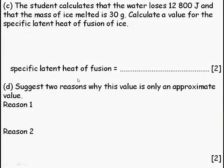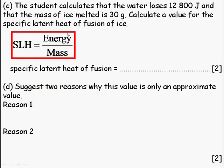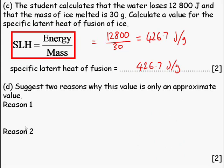Pause the video and read this question. So the student calculated that the water loses 12,800 joules, and that the mass of the ice is 30 grams. Calculate the value for the specific latent heat of ice. Quite easy, just stick the numbers into this formula, and you get your answer. Remember, always put the units, joules per gram.